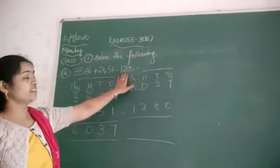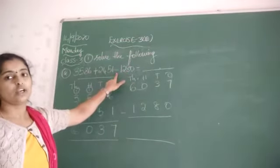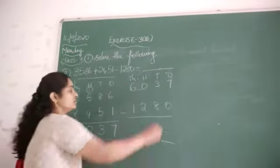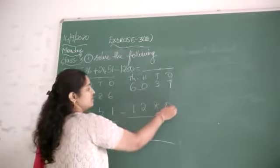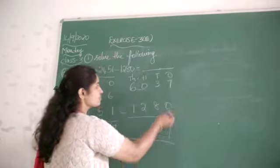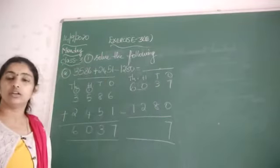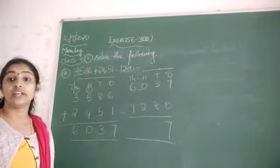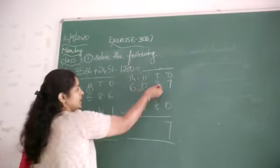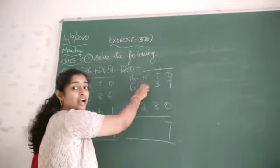We need to subtract because here it is given minus. So seven minus zero is seven. Three minus eight is not possible. So what I need to do here? I need to take a borrow. But here I have six — so how is it possible? Not possible. Go with the next one.